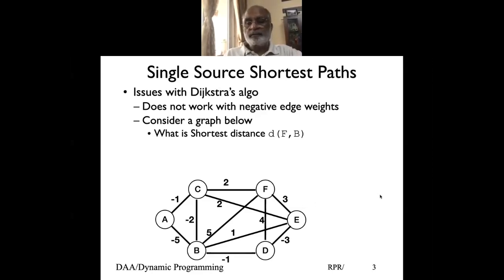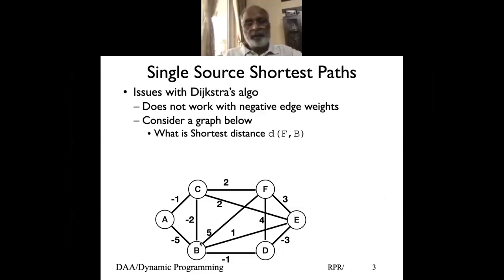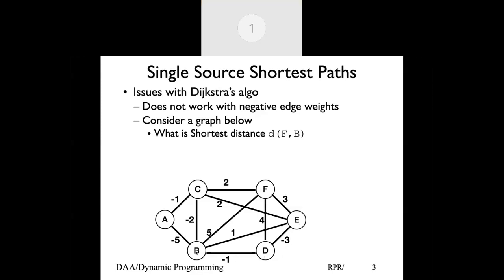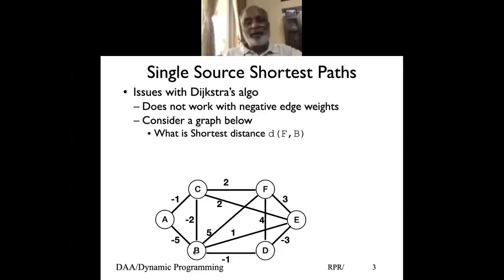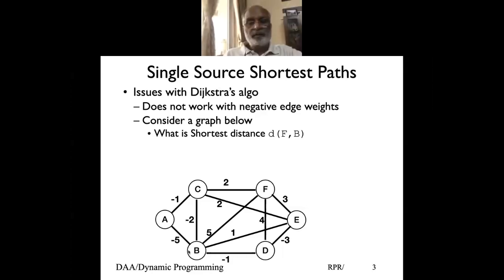F to E, E to B — that gives me four. Can you do better? F to E, E to D, D to B — that gives me minus one. F to E, yes.